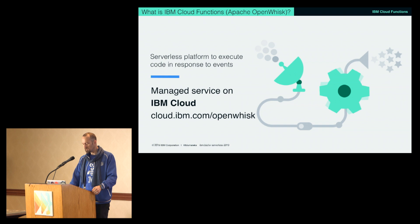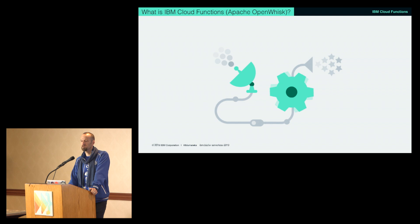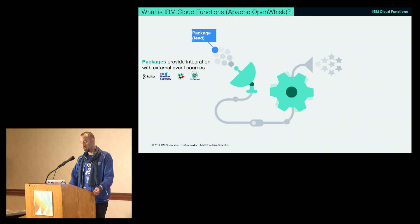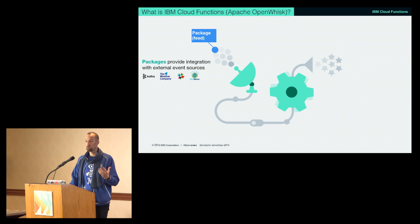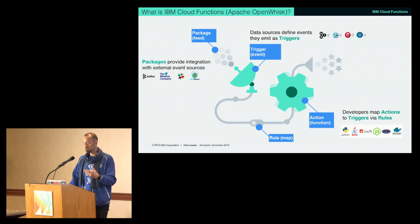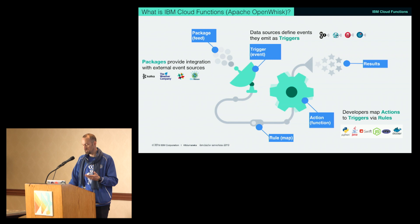Feel free to try it out — I'm showing a demo later, and if you try it with me you can get a bottle. Some of the event feeds you can use include a new message coming into Kafka infrastructure, or the weather company changing the weather — for example rain — which creates an event that flows through a rules engine and generates results. You can write your function in JavaScript, Python, Swift, or even deploy your own Docker container as the action.